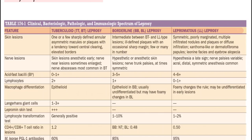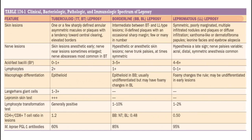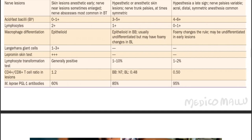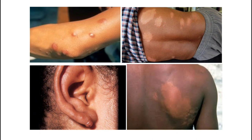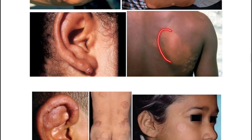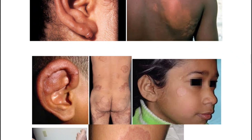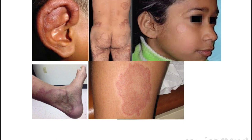The table combines TT and BT as tuberculoid, BB and BL as borderline, and shows lepromatous leprosy features. Various clinical images show lesions affecting many parts of the body — raised borders, hypopigmented lesions, pseudopodia-like margins, satellite lesions, and erythematous lesions.